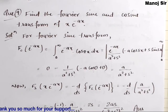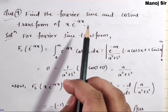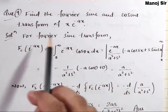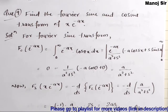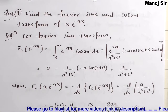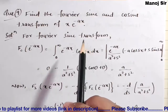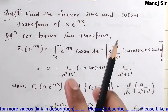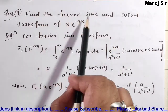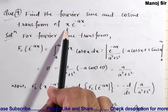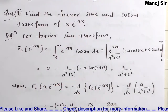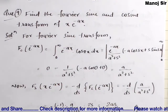So let us start solving this very important problem. The question says: find the Fourier sine and cosine transform of x times e to the power minus ax. We need to find both — the Fourier sine transform and the Fourier cosine transform for the function x·e^(-ax).